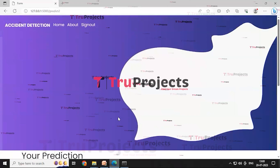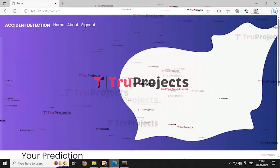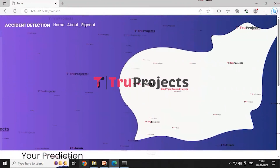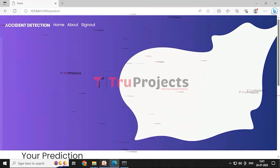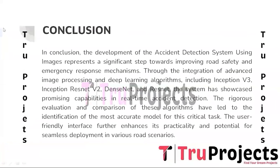In this way, we can detect accidents using images. In conclusion, the development of the accident detection system using images represents a significant step towards improving road safety and emergency response mechanisms.